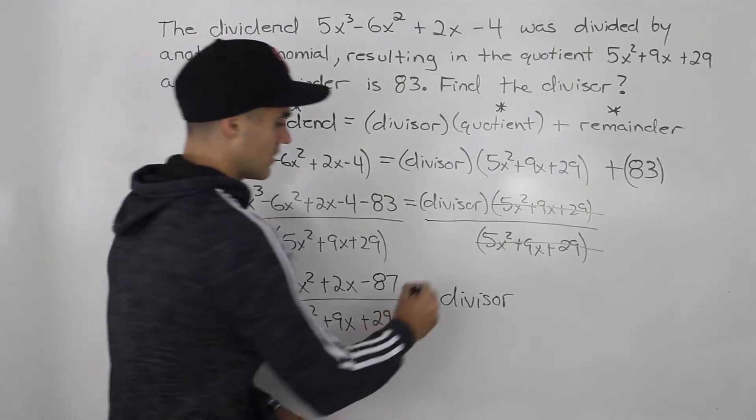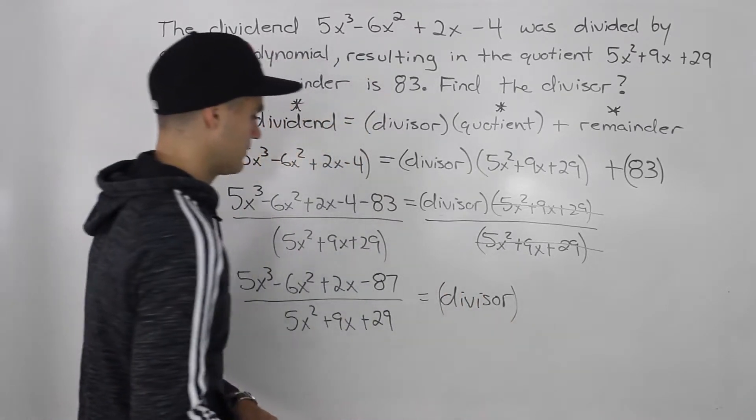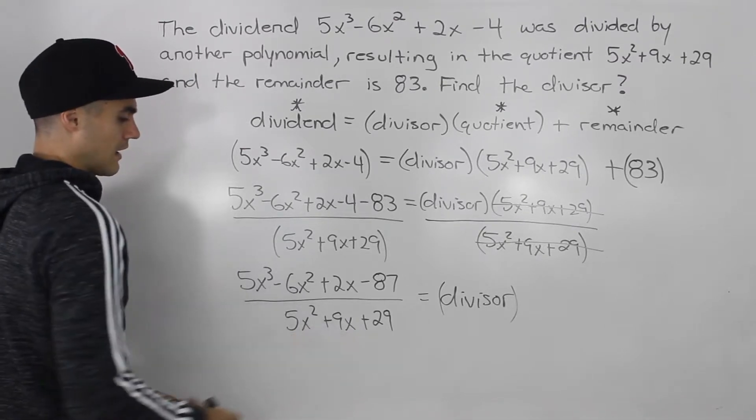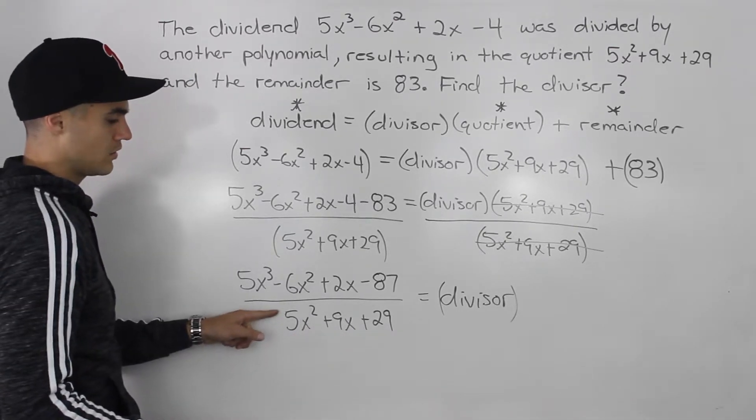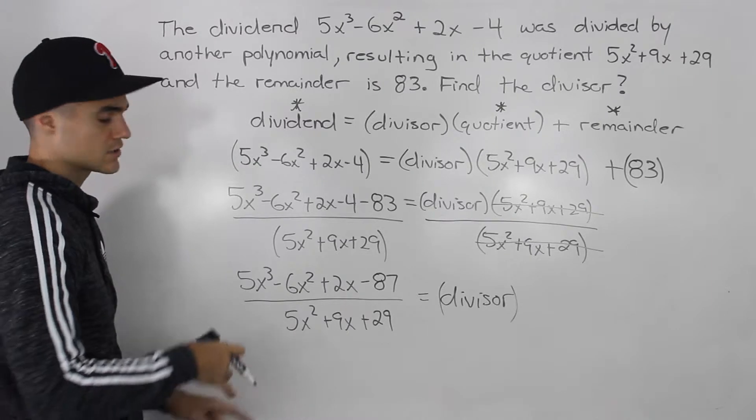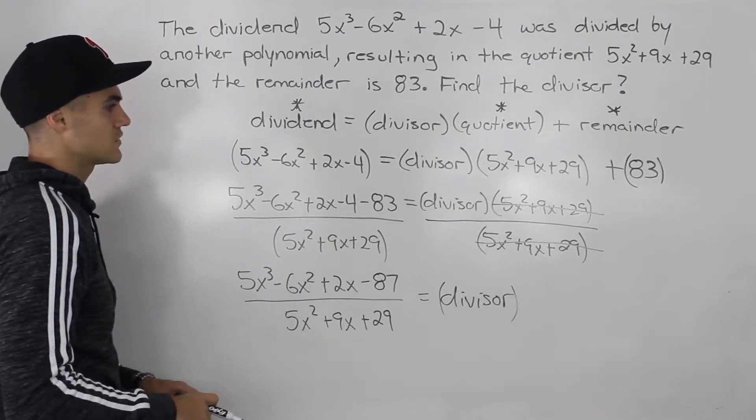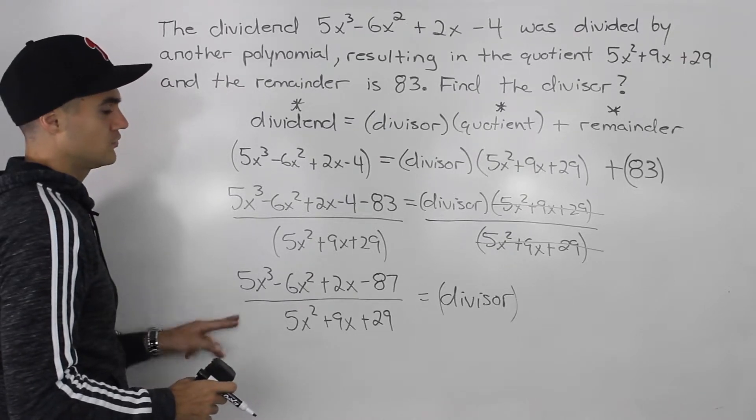So now notice how the divisor, what we're looking for, is just equal to one polynomial divided by another polynomial. And since the polynomial that we are dividing by has a degree greater than one, we can only use long division. We can't use synthetic division. So that's what we'll do.